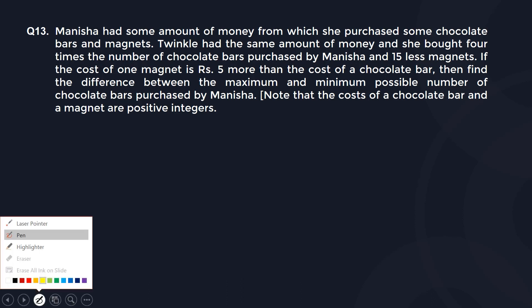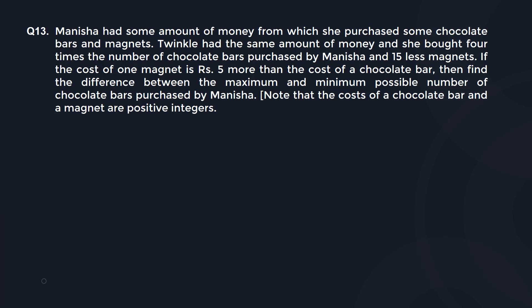So we are basically saying that there is a lady by name Manisha and she had x rupees. She bought with this x rupees c number of chocolate bars and m number of magnets.